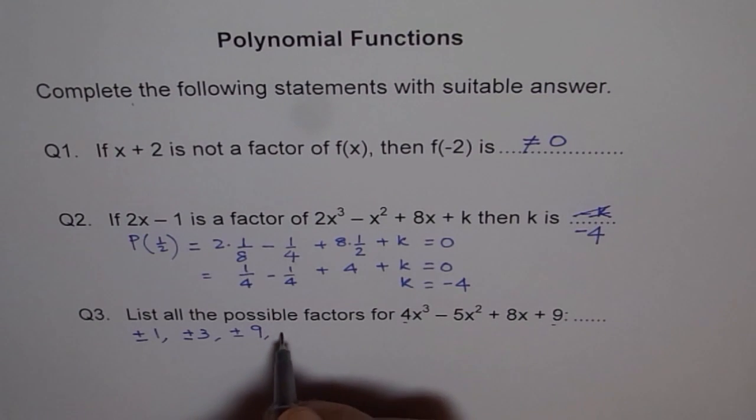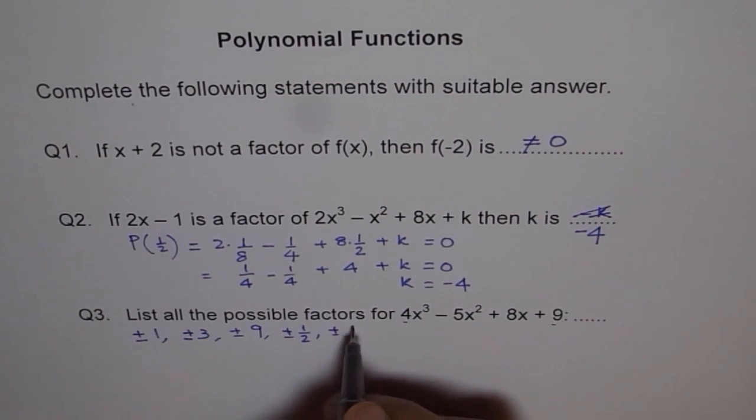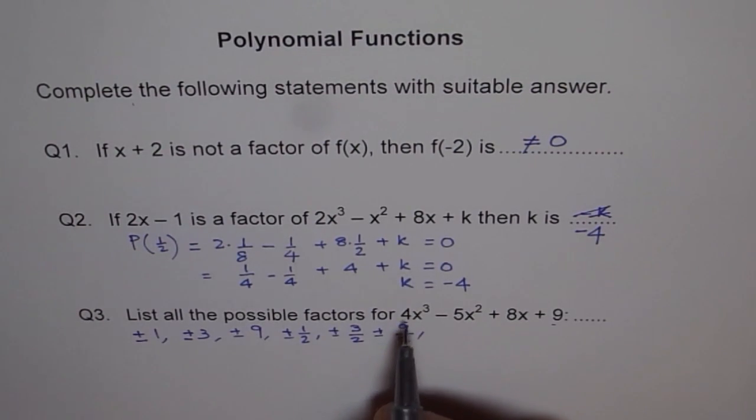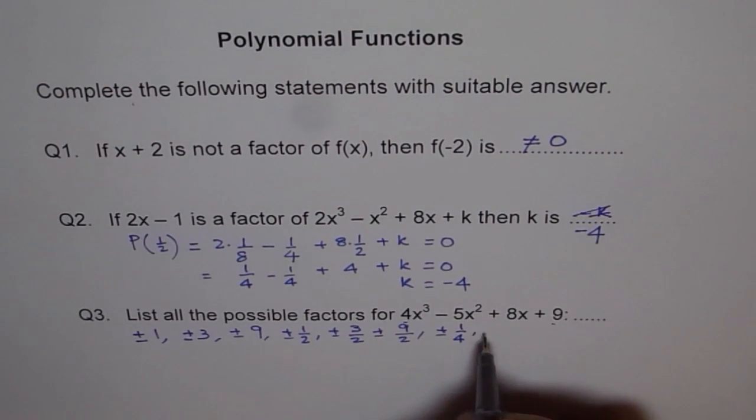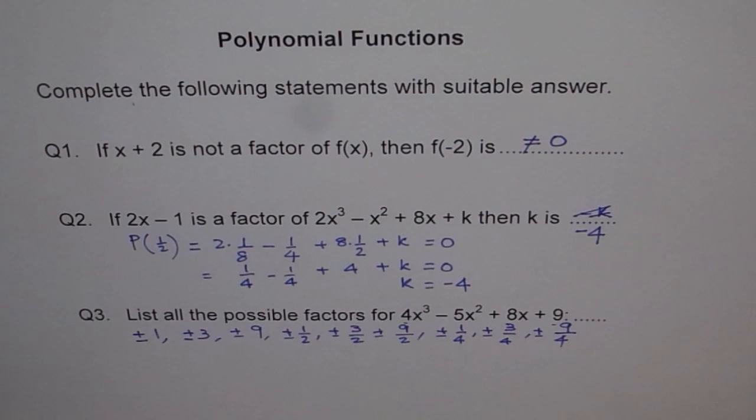Now let's take 2. If I take 2, then we get plus and minus 1/2, plus and minus 3/2, plus and minus 9/2. So we've taken care of 2, the factor of 4. Now let's take care of 4 itself. So we get plus and minus 1/4, plus and minus 3/4, and plus and minus 9/4. These are all the possible factors for this polynomial expression. That's how it is. Move on to the next set of questions. Thank you.